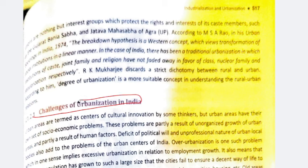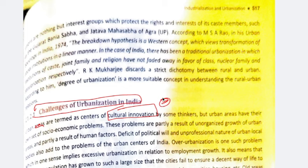Challenges of Urbanization in India. We know that a rural area is a village and an urban area is a city. As the city is growing more, people have to face more problems. Urban areas are called centers of cultural innovation — because people are living with different backgrounds, there are many migrants from different places, whether it is due to work, study, or treatment. Therefore, a composite culture is developed in urban areas. That is why it is called a center of cultural innovation. This is a positive aspect.